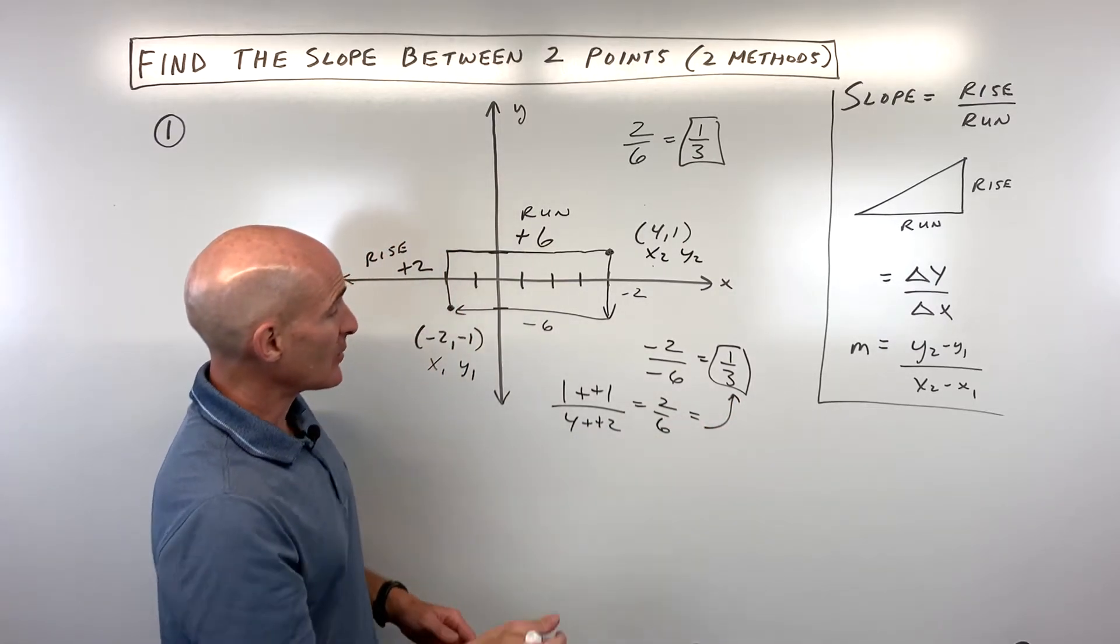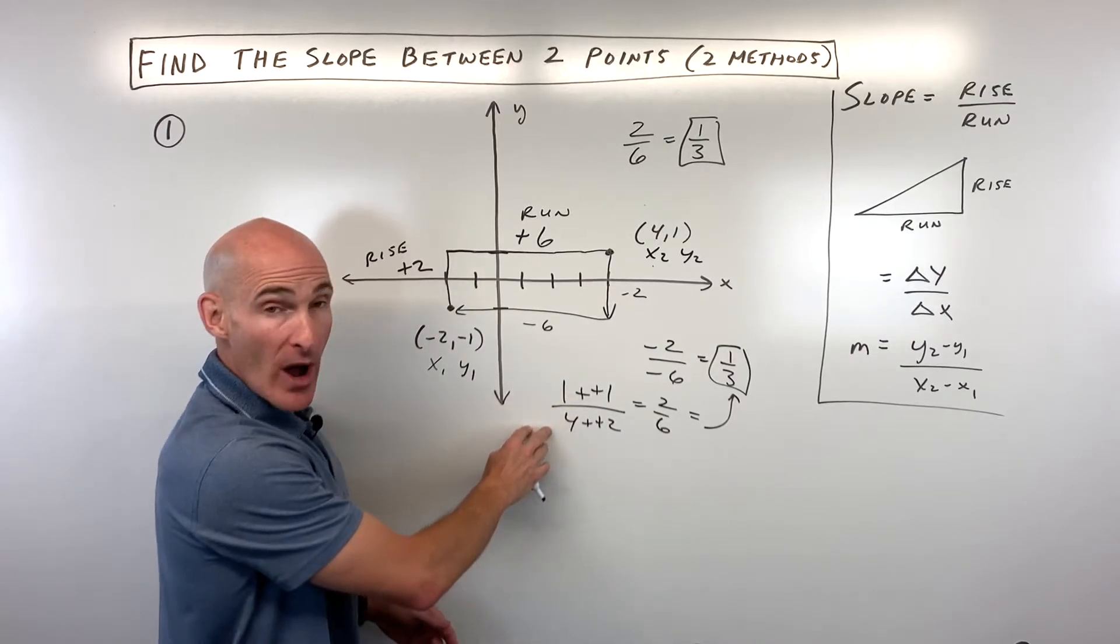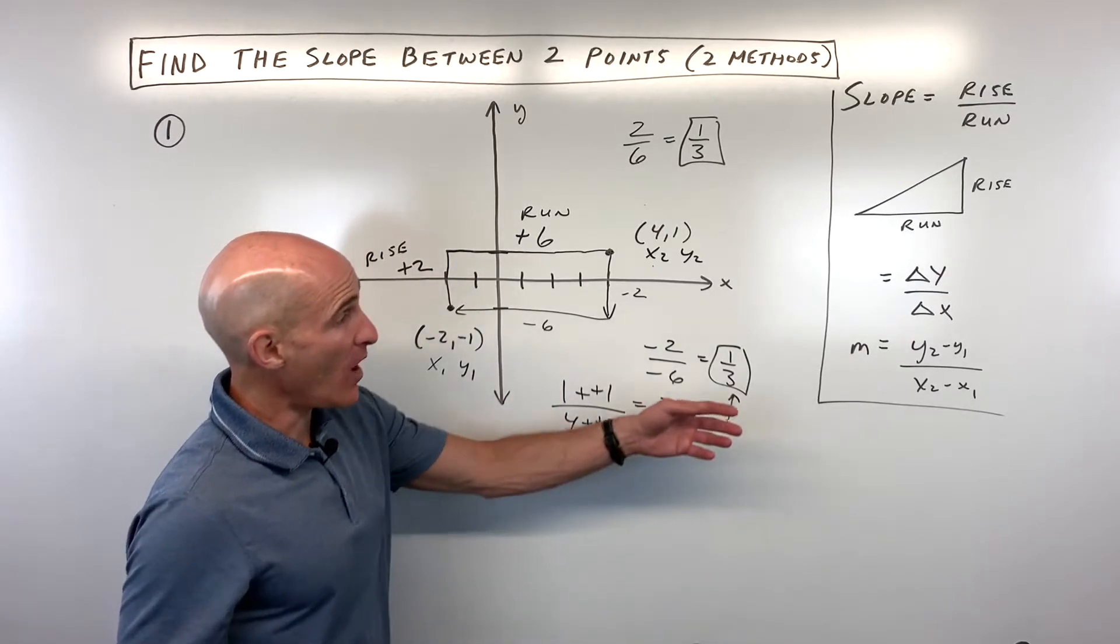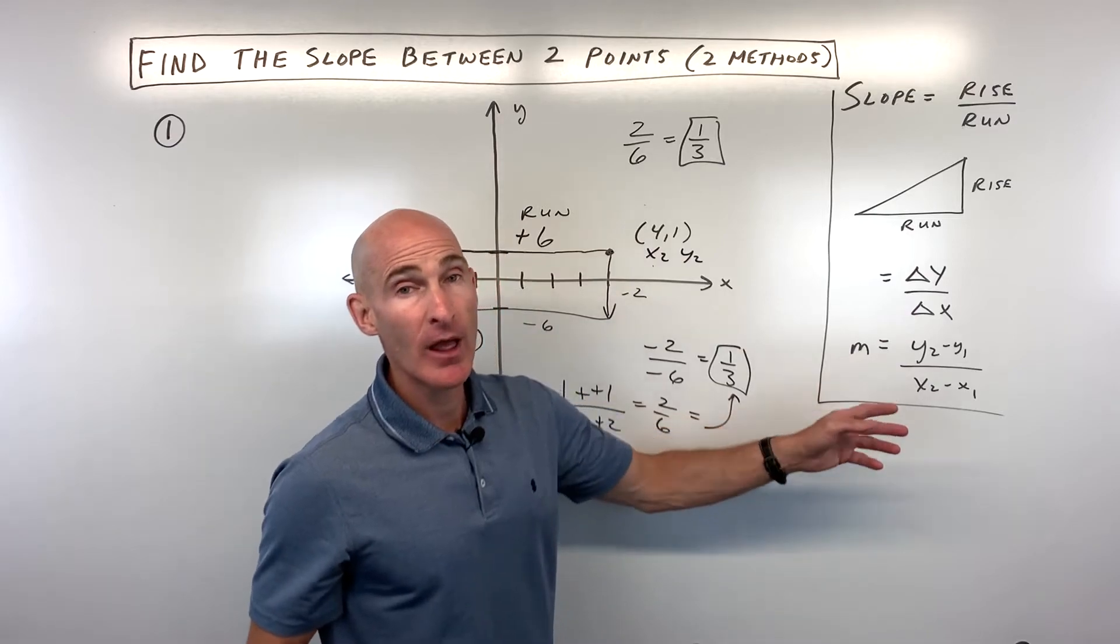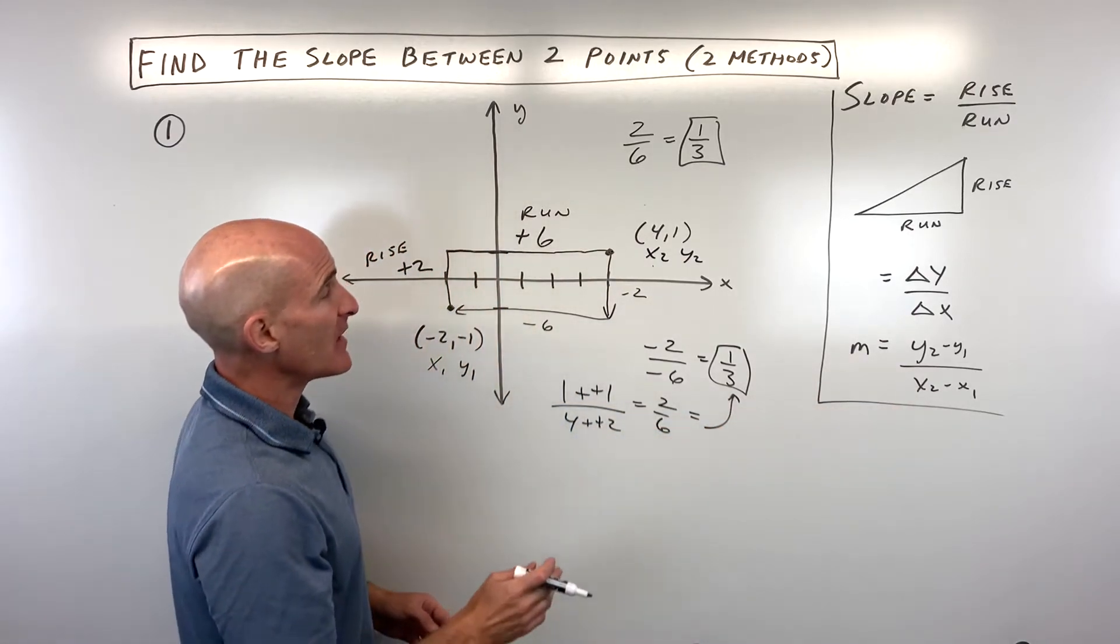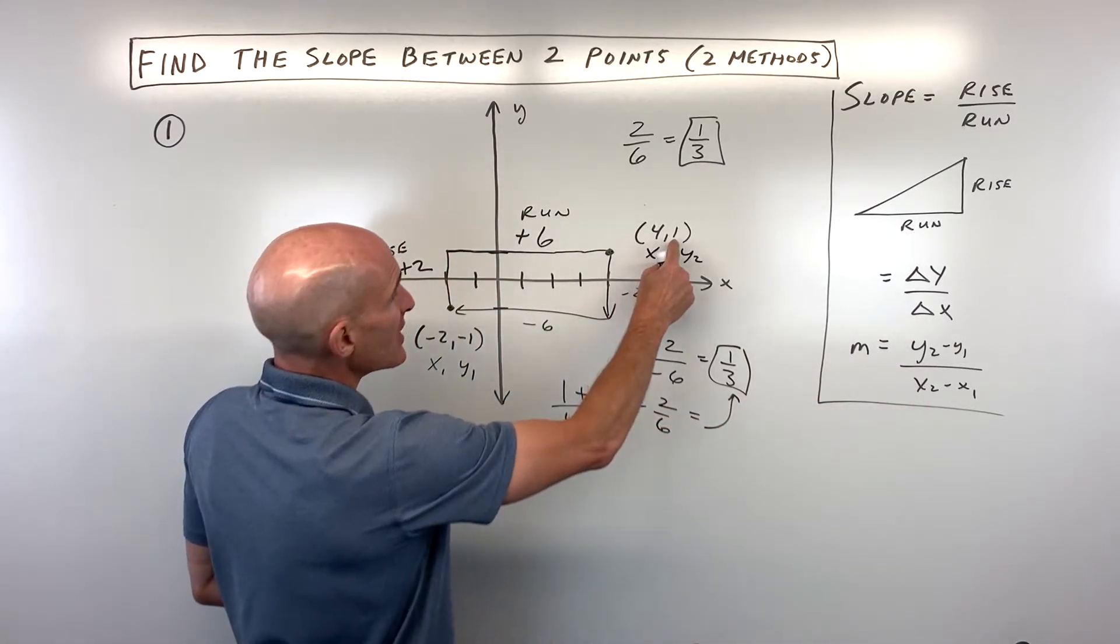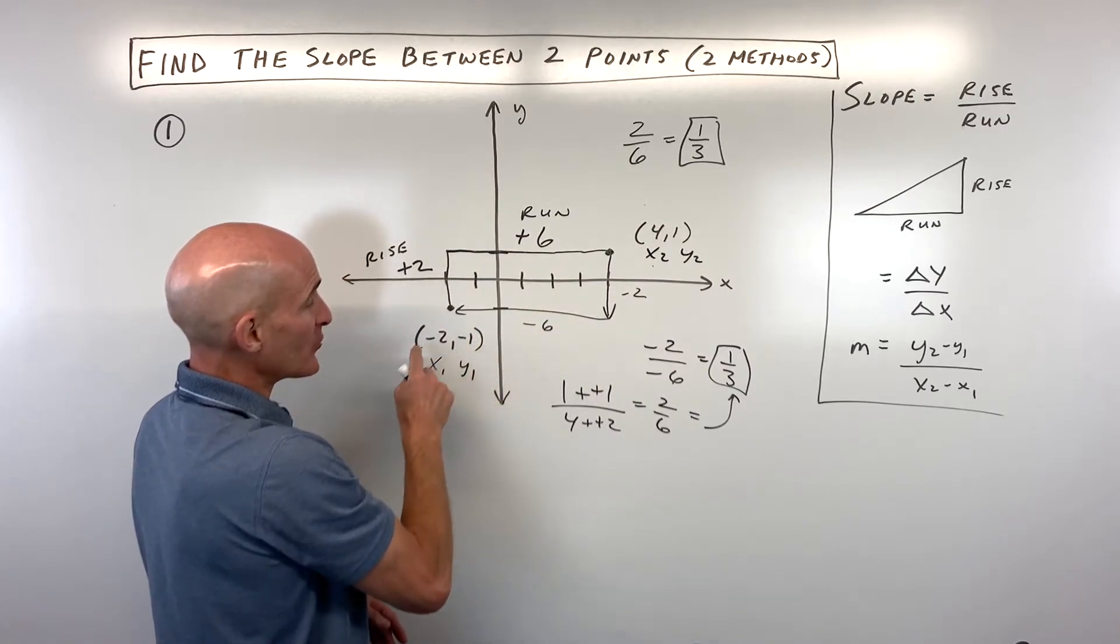Sometimes students make a mistake: they'll put the x's in the numerator and the y's in the denominator. You want to make sure it's the y's in the numerator, x's in the denominator. The other mistake that students sometimes make is that they will say 1 minus negative 1 and then they'll switch the order.